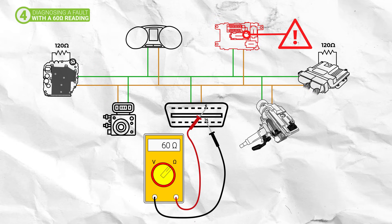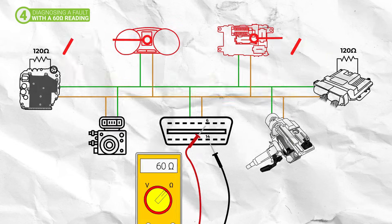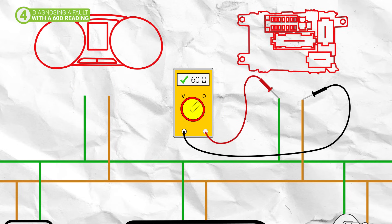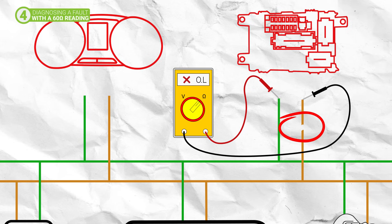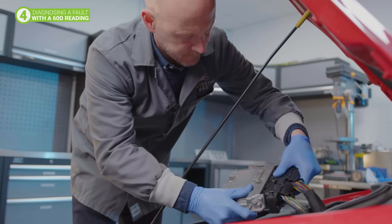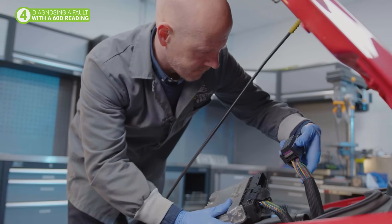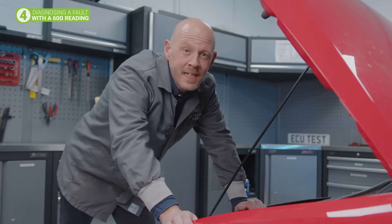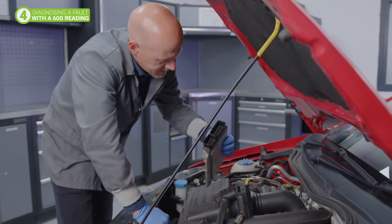So if you do have CAN bus communication faults with one or multiple modules but you had a good reading of 60 ohms at the OBD2 port, then you should disconnect the affected module or modules and complete a resistance check between the two CAN terminals at the module's connector. You can identify which wires are the CAN lines as they will be twisted together. If the multimeter reading is OL, then there is an open circuit in the loom which will need to be repaired. However, if you get a reading of 60 ohms, then the wiring is good and the fault likely lies with the module itself.